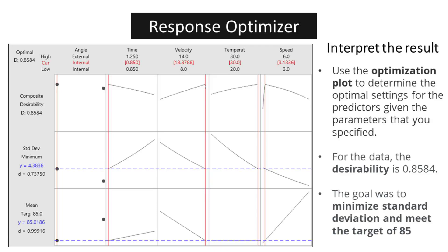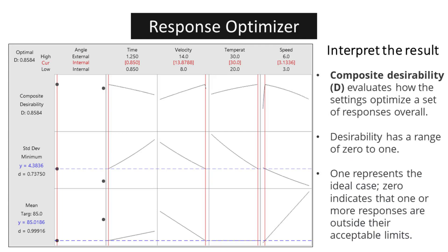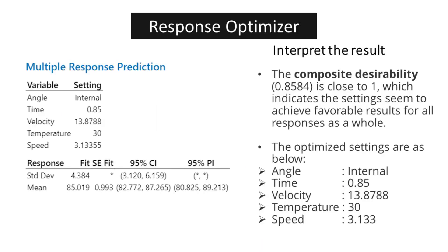Composite desirability (D) is a crucial metric for evaluating the overall effectiveness of a set of response optimizations. It provides a comprehensive assessment of how well the settings align with the desired outcomes. With a range from 0 to 1, desirability offers a clear indication of the extent to which the responses meet their respective targets. A desirability score of 1 signifies an ideal scenario where all responses are within their acceptable limits, while a score of 0 indicates that one or more responses have failed to meet the desired criteria. The composite desirability, 0.8584, is close to 1, which indicates the settings seem to achieve favorable results for all responses as a whole. The optimized settings are as below: angle, internal.